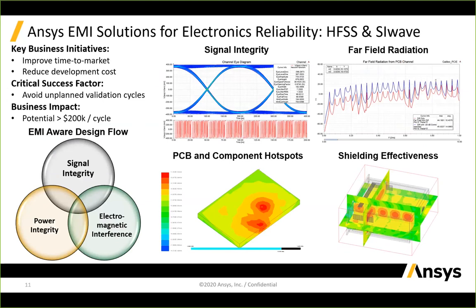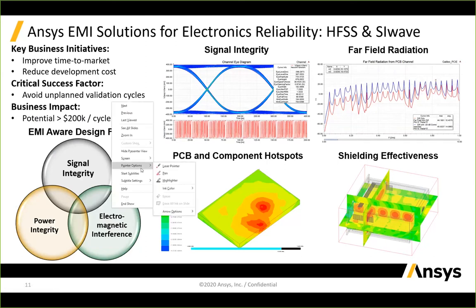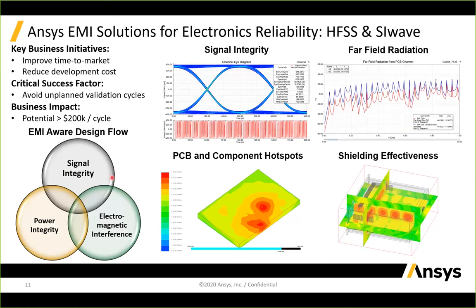Our EMI solutions for electronics reliability are HFSS and SI WAVE. We look at signal integrity, far-field radiation, PCB and component hotspots, and when linked to IcePack, we get temperature and can run that two-way loop. Shielding effectiveness is also covered. This EMI design-aware flow deals with signal and power integrity and electromagnetic interference. The business impact is significant—at least six figures if you can cut down one design cycle on the PCB.